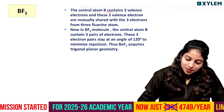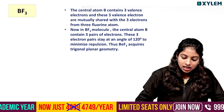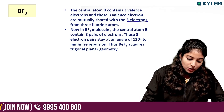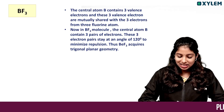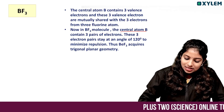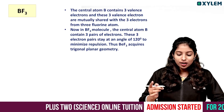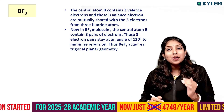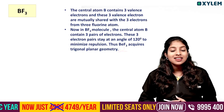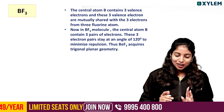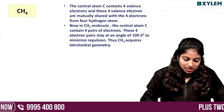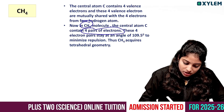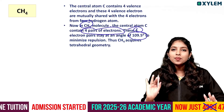For BF3, the central atom boron contains three pairs of electrons. These three pairs of electrons are arranged at 120 degrees, giving trigonal planar geometry. For CH4, there are 4 pairs of electrons arranged at 109.5 degrees, giving tetrahedral geometry.